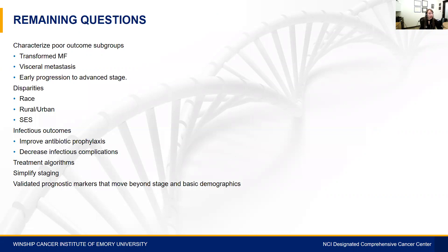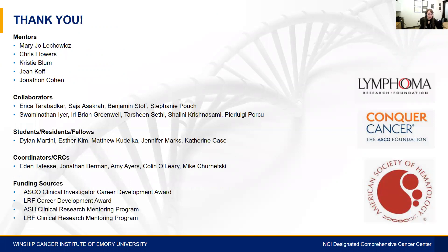There are many questions we are actively working on: characterizing poor-outcome subgroups including transformed MF patients, patients with visceral metastases, patients who progress from early to advanced stage, disparities in race and socioeconomic status, rural versus urban differences, infectious outcomes, antibiotic prophylaxis utilization, and how to simplify treatment algorithms, staging, and validate prognostic markers beyond stage and basic demographics. Thank you all for your time and attention, and a huge thank you to my mentors, especially Dr. Mary Dulekowicz, as well as other members of our Winship Group, my collaborators, students, residents, fellows, coordinators, and funding sources.